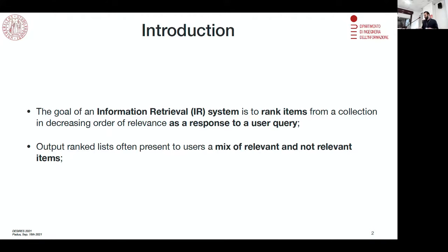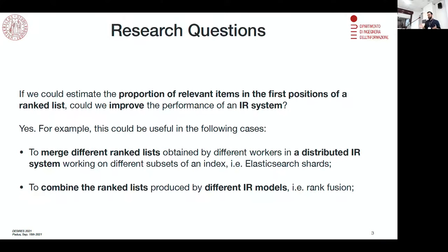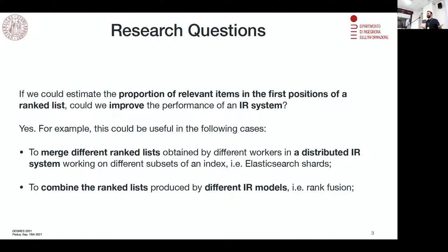From this context, we decided to ask ourselves the following question: what if we could estimate the actual proportion of relevant to not-relevant documents in the top K positions of a ranked list? Could this help us improve the overall quality of a search engine? The answer we gave ourselves was yes, and we thought of at least a couple of examples where this could be useful.